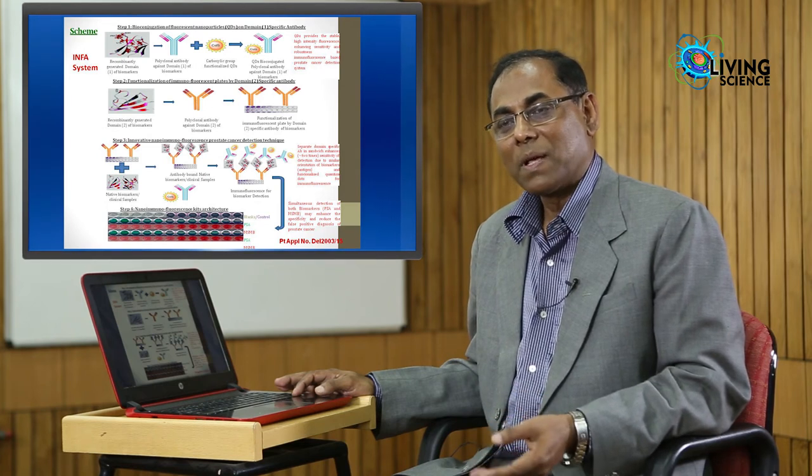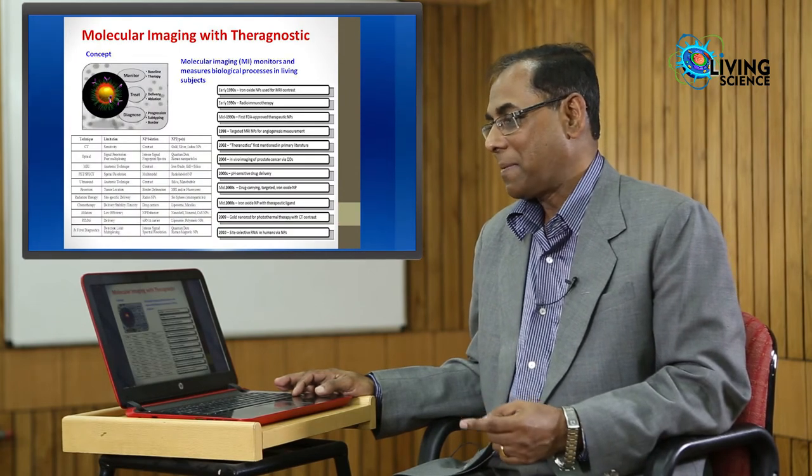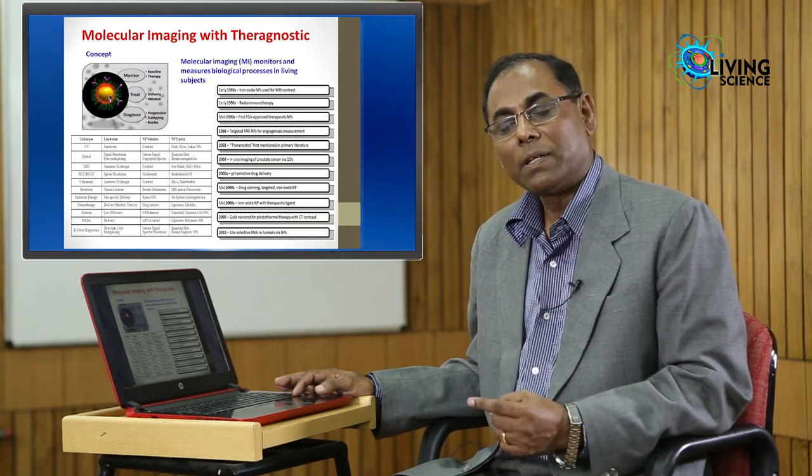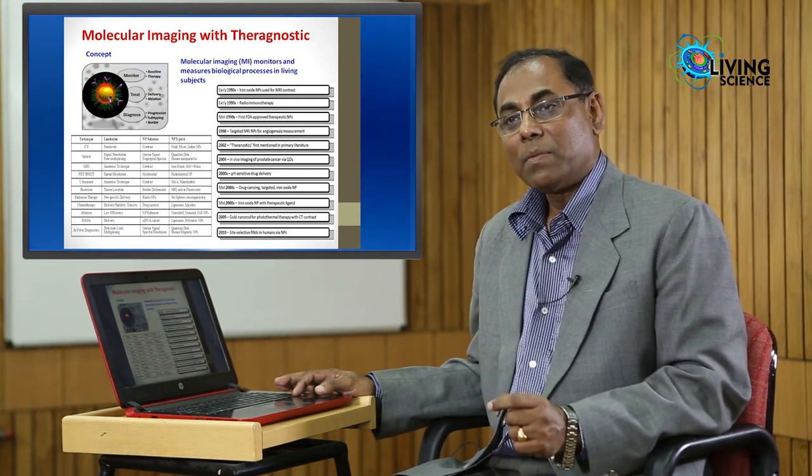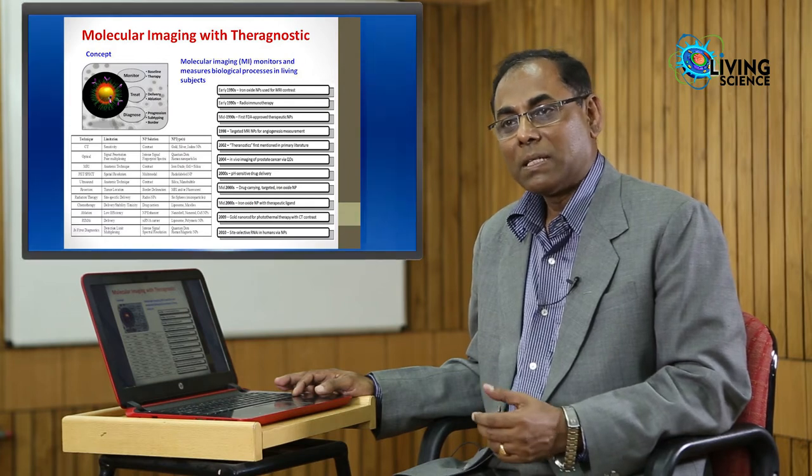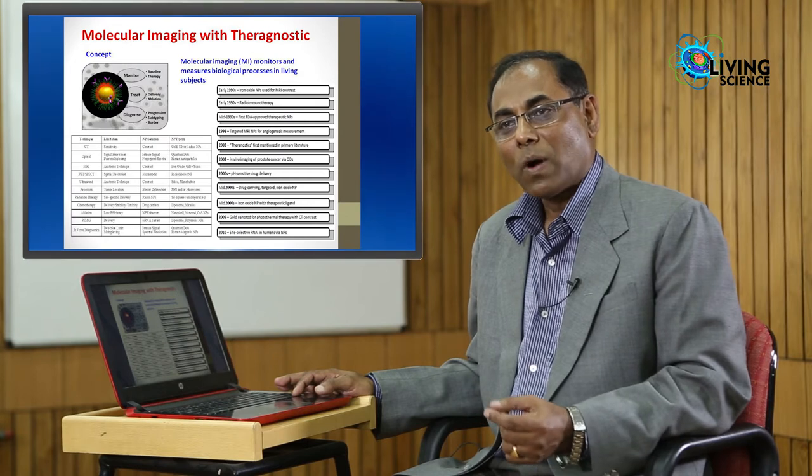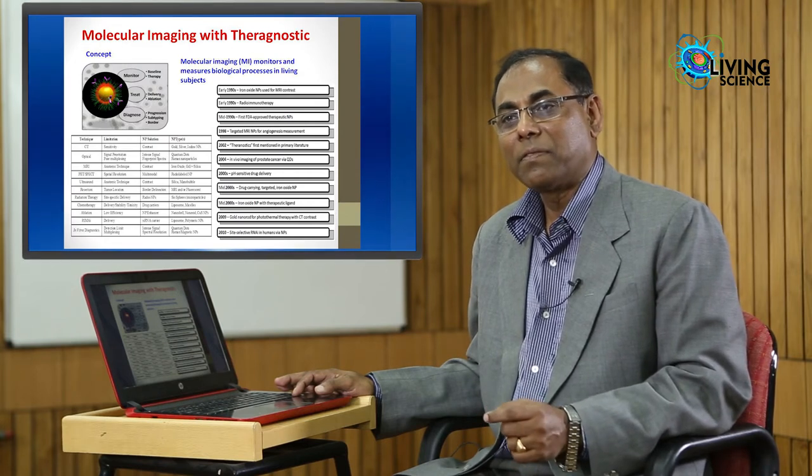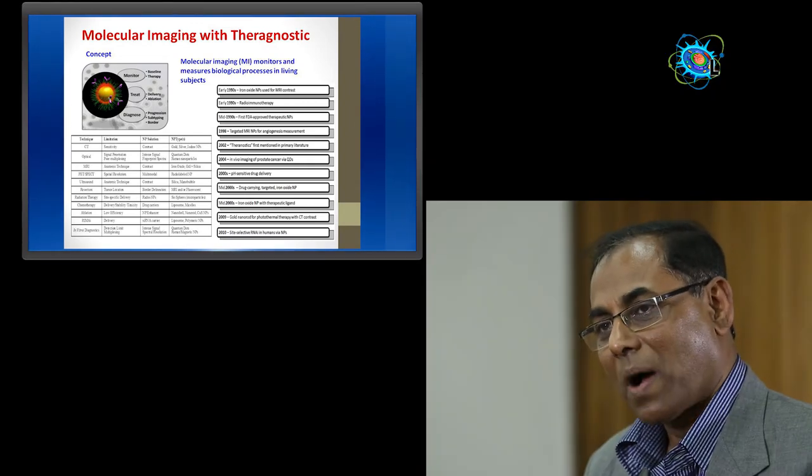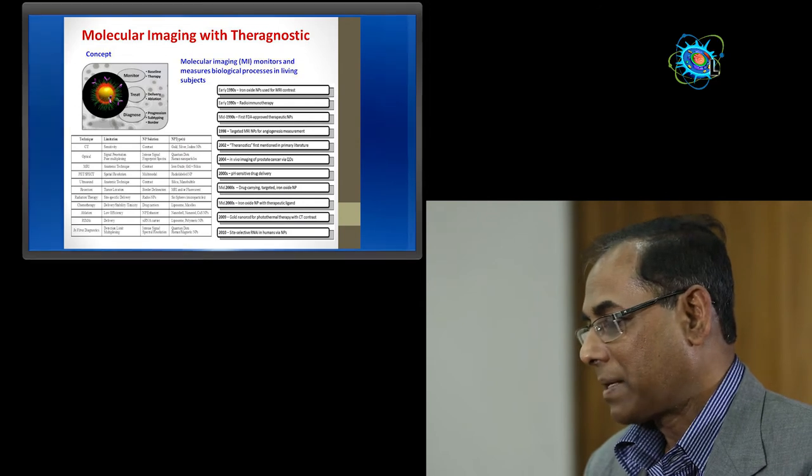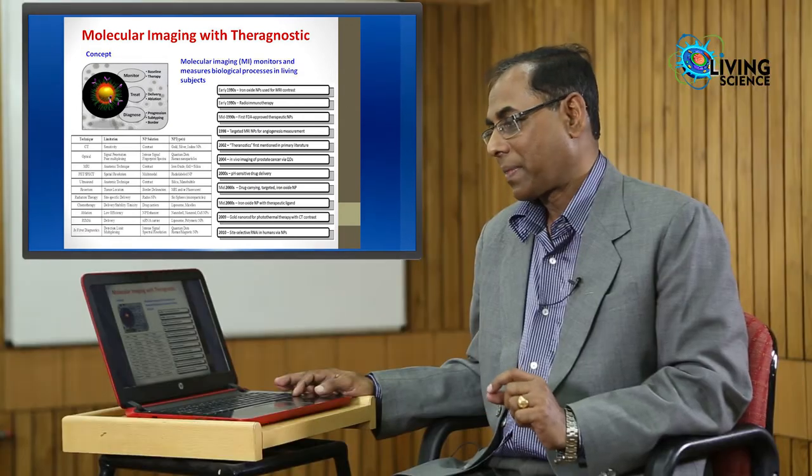It is basically an ELISA kind of system, but it will be very easy—a single-point measurement, a strong fluorescence-based system which is easy to detect. Then, in the imaging side, the very important area is the recent concept of molecular imaging and also theranostics. Molecular imaging—in normal imaging, you can just see the dimension of your damaged tissue or different tissues, but what is happening in the tissue, the functional component, is very difficult to assess.